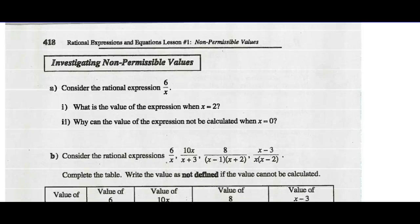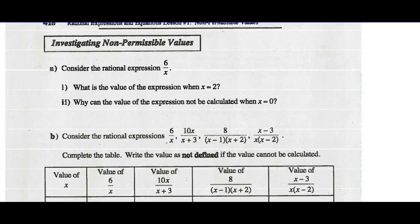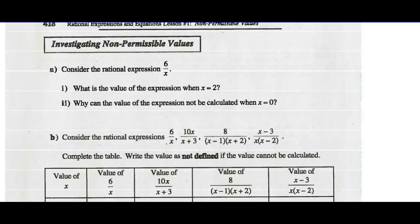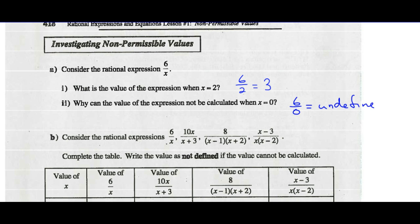Investigating non-permissible values. Let's consider the rational expression 6 divided by x. What's the value of the expression when x is 2? Well, we simply go 6 divided by 2, or 3. Why can the value of the expression not be calculated when x is 0? If we try it — 6 divided by 0 — we know anything divided by 0 is undefined. If you try it in your calculator, it will tell you that's an error. We cannot divide by 0.